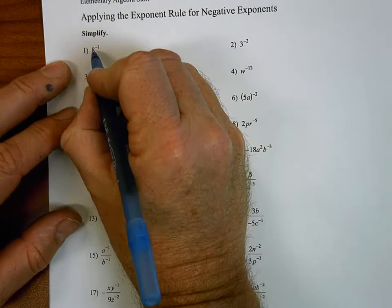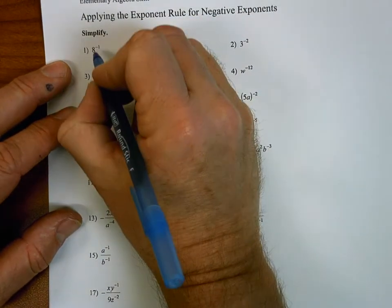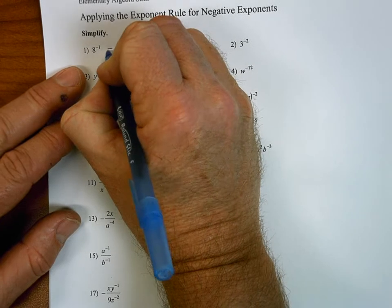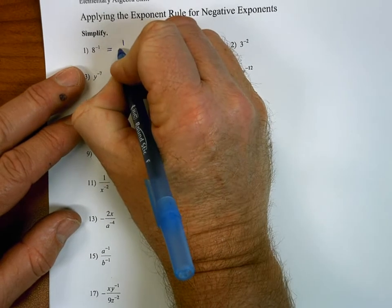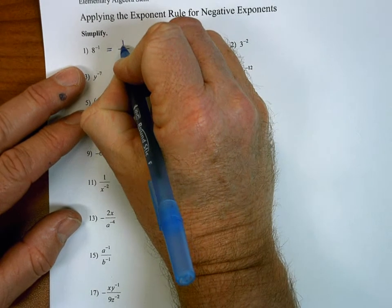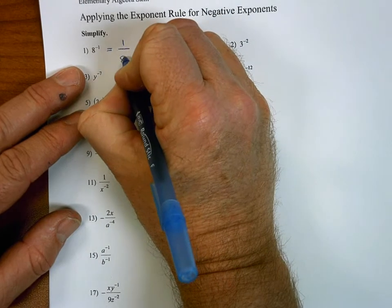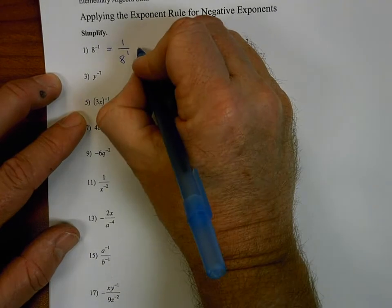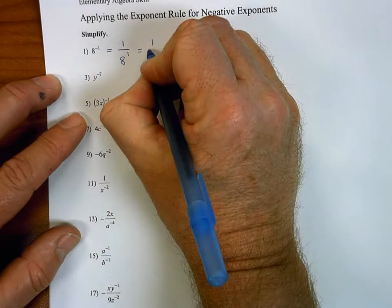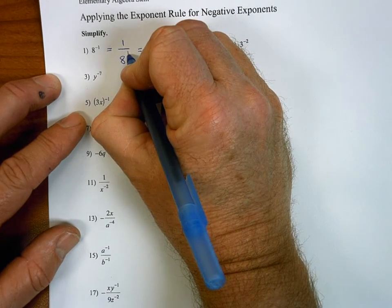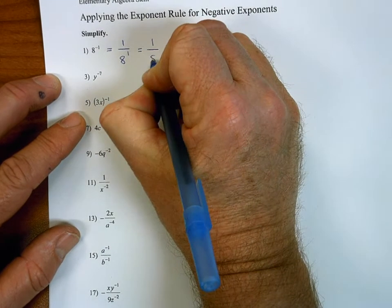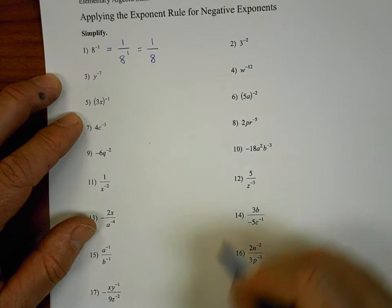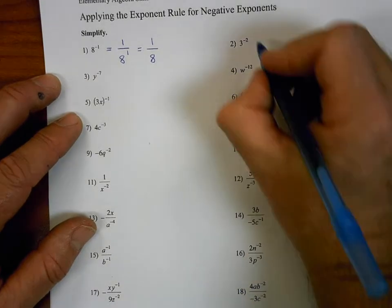So number one: we have eight to the negative first power. To simplify this, we write it as one over eight to the positive one power. The exponent of one is unnecessary, so really number one is just one over eight. Number two: three to the negative two power.